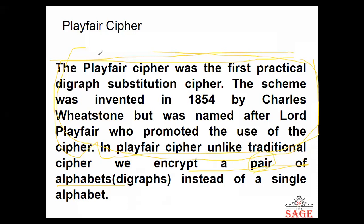Now what is the meaning of pair? The meaning of pair is simply: if a letter is there and b letter is there individually, we cannot say it is a pair. We don't say it is a pair — this is an individual letter. Suppose a is there and b is there separately — we will say that this is not a pair.